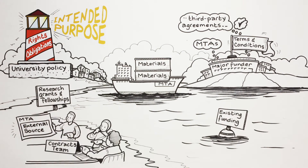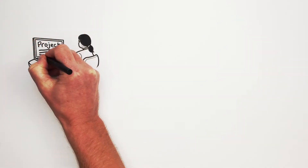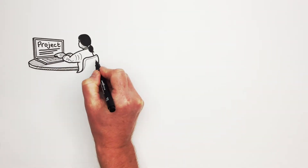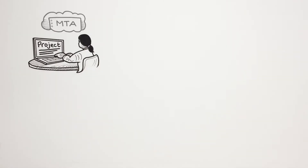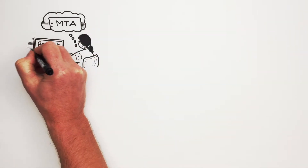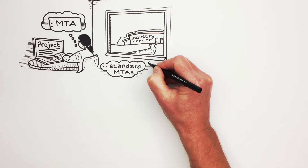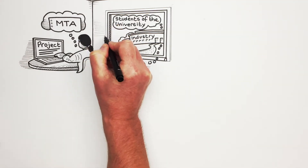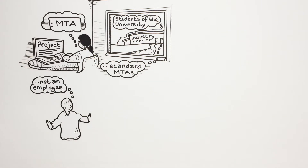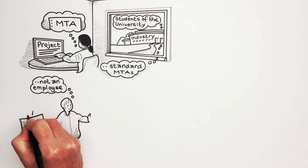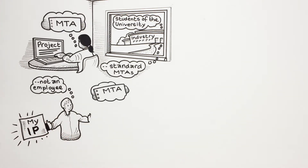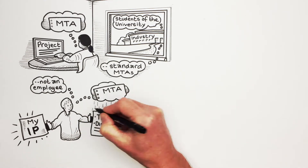Problems could potentially arise, for example, if a student carries out work on a project in which the material from the MTA is required. It is important to note that standard MTAs from industry may not refer to or include students from the university. Students are not employees. Therefore, the university does not automatically own a student's IP. It is of great importance that the MTA does not prejudice the student from publishing a thesis or dissertation.